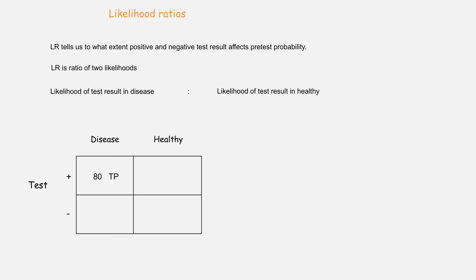Suppose we have a diagnostic test with sensitivity of 80% and specificity of 90%. Based on this test, probability of a positive test result in the presence of disease is 80%, which is also equal to true positive results. Probability of a positive test result in a person who is healthy is 10%, which is also equal to false positive results. The ratio of these two probabilities is equal to the positive likelihood ratio. In this case, it will be 80:10 or 8:1.